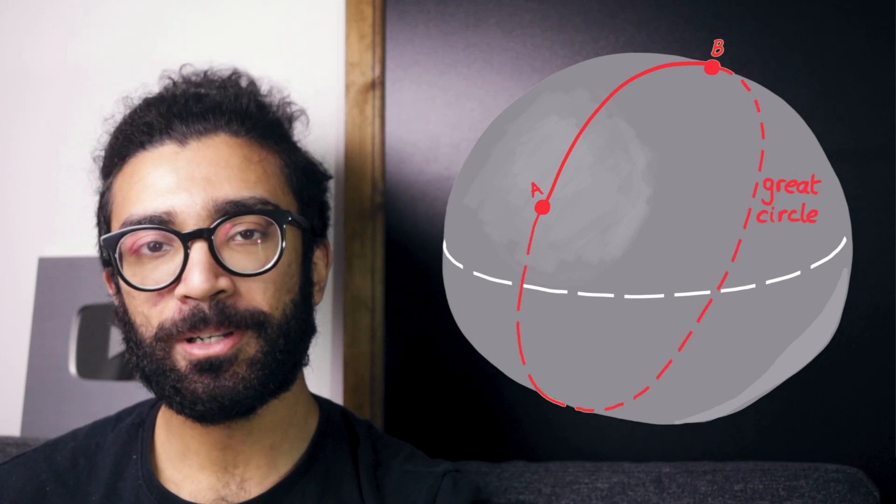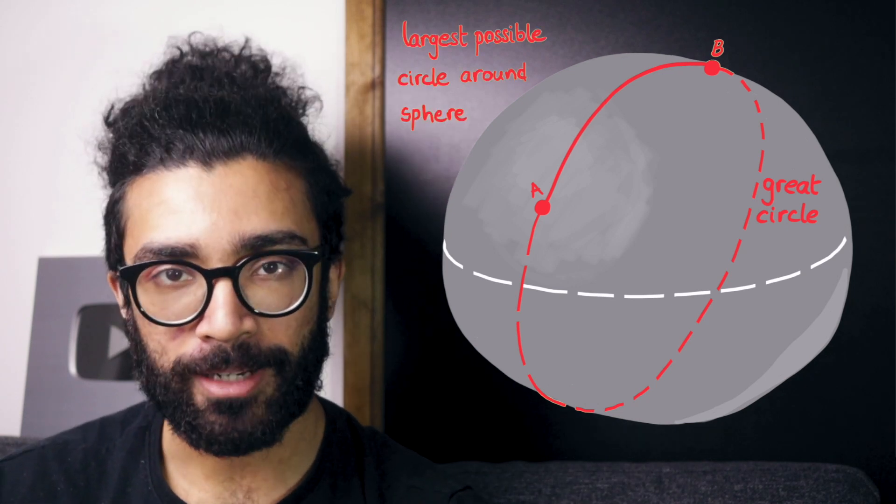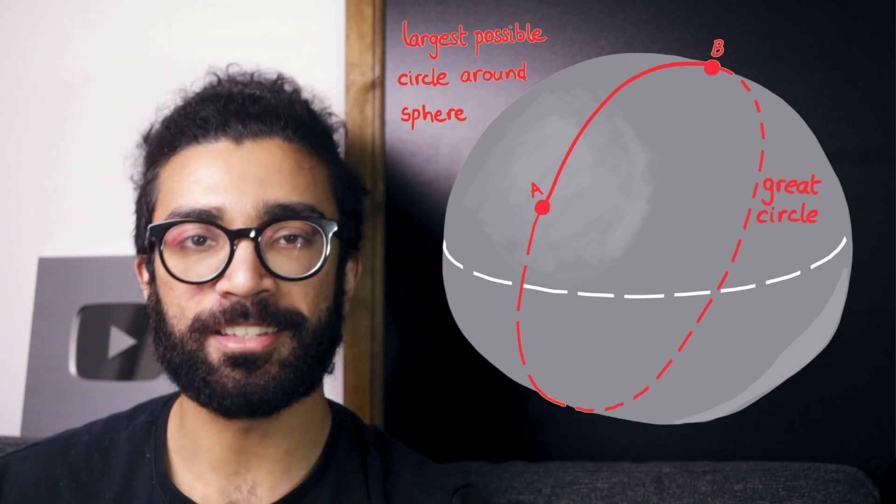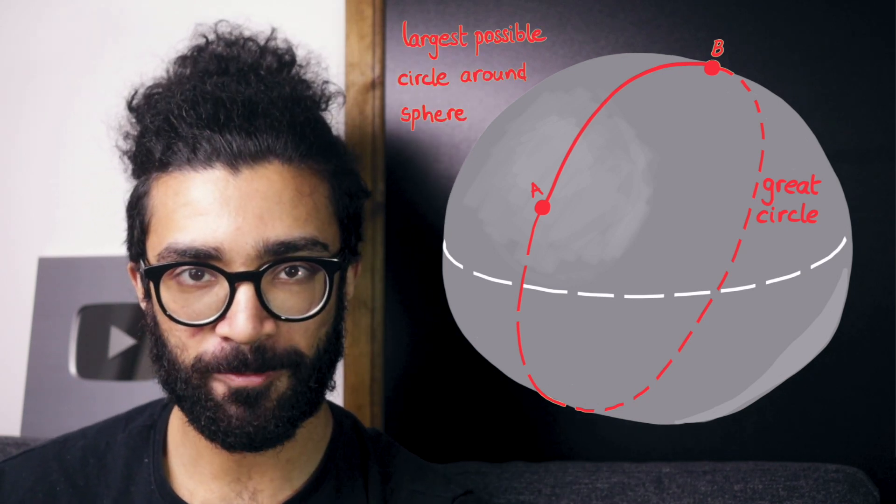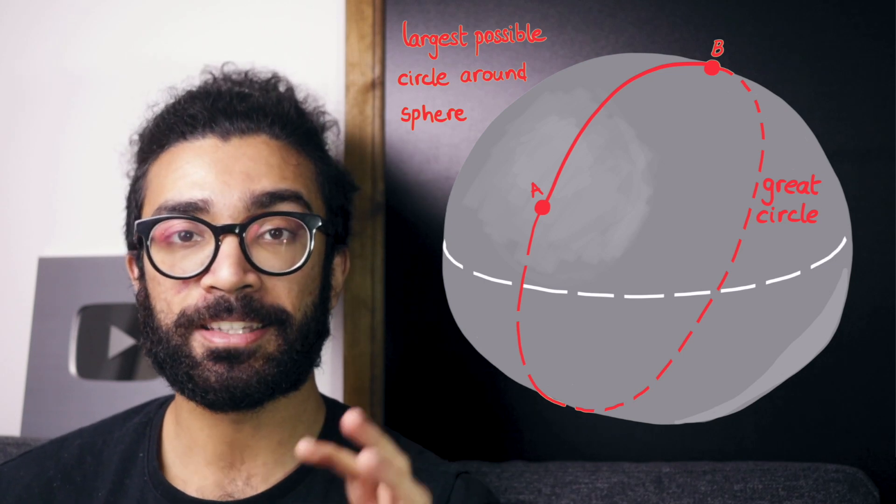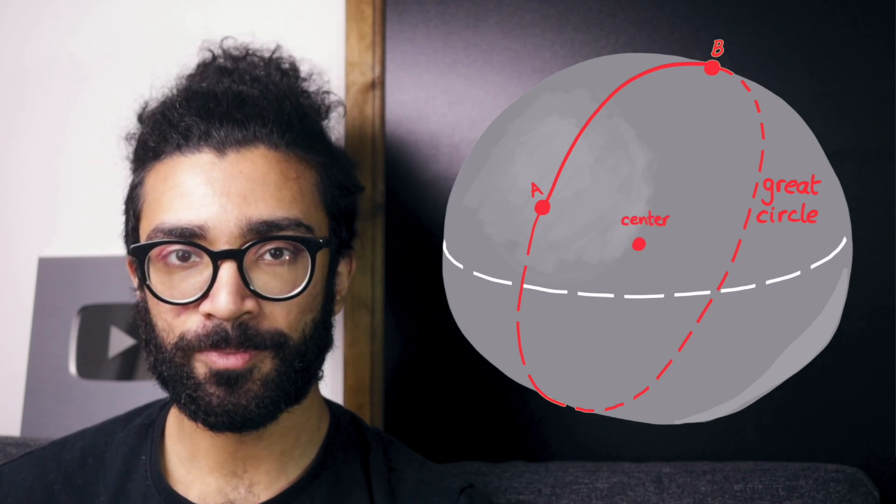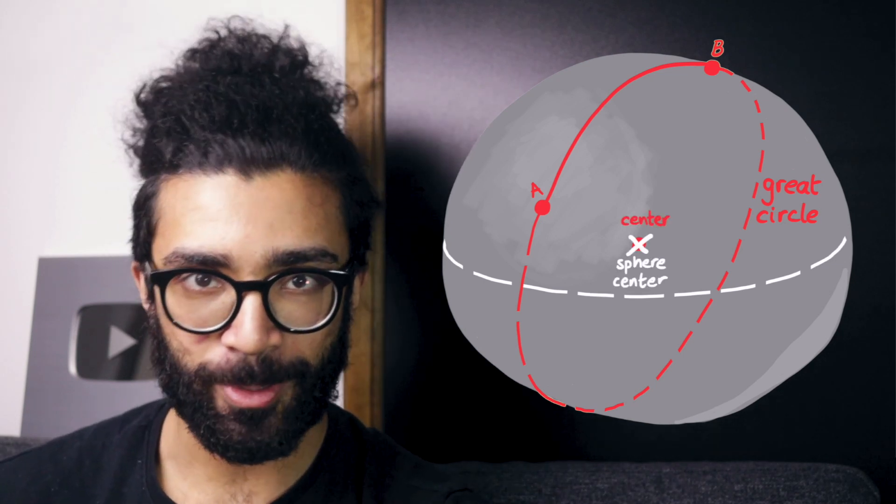A great circle is simply one that is the largest that you can create for any given sphere. It's essentially the diameter of the sphere. Another way to think about this is that the center of a great circle is also the center of the sphere that we happen to be considering.